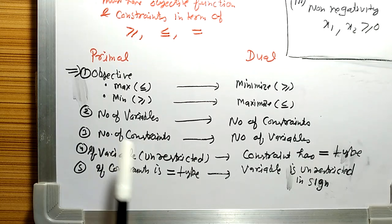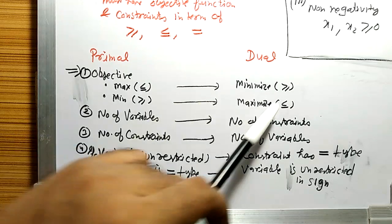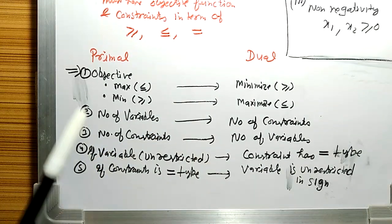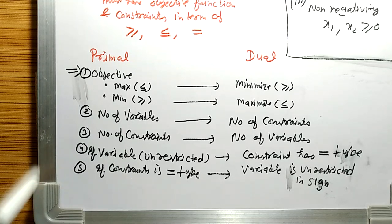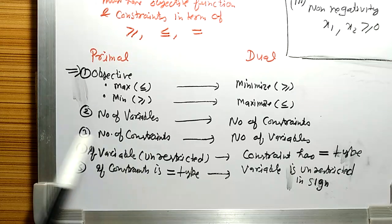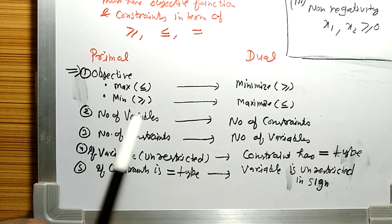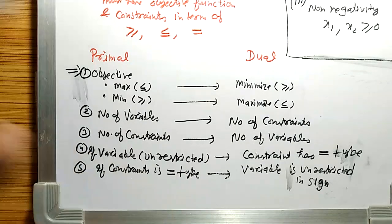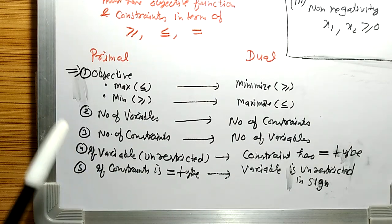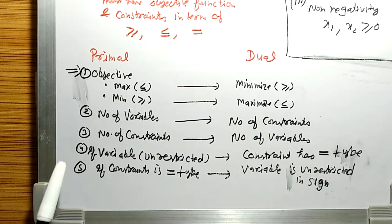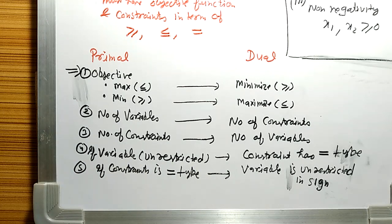Rule number two concerns the number of variables and constraints. However many variables there are in the primal, that many constraints will be formed in the dual. And however many constraints (equations) there are in the primal, that many variables will be formed in the dual. So the number of variables converts to the number of constraints, and the number of constraints converts to the number of variables.